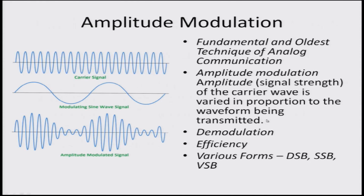One of the key concepts that we are going to start with is amplitude modulation. It is one of the most fundamental and oldest techniques of analog communication — one of the earliest techniques of radio wave communication in which a message signal modulates the amplitude of a high frequency carrier wave.